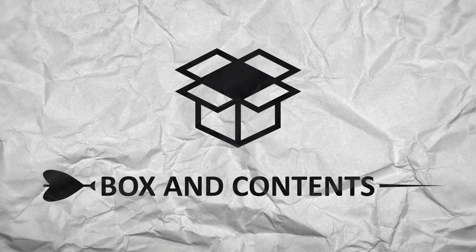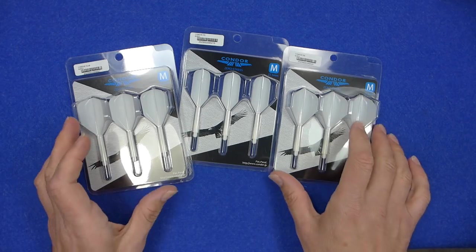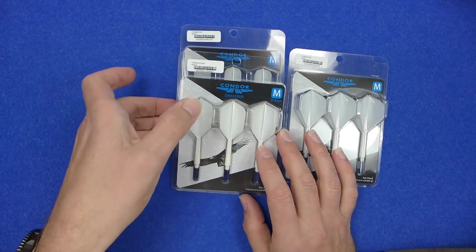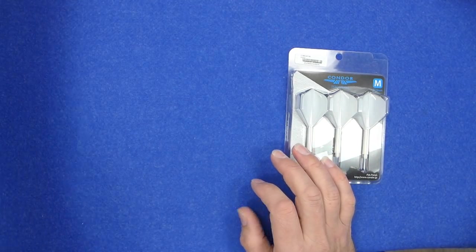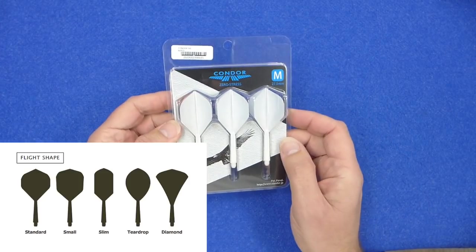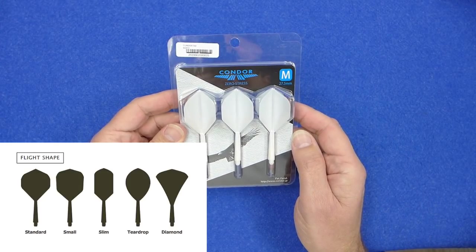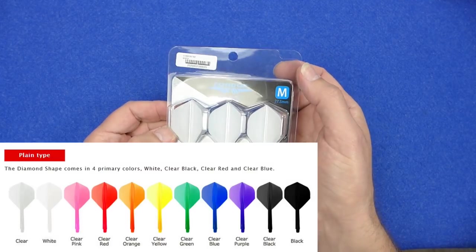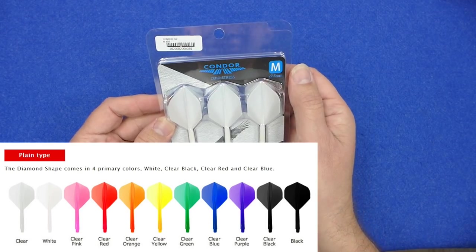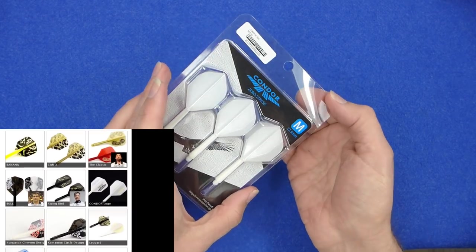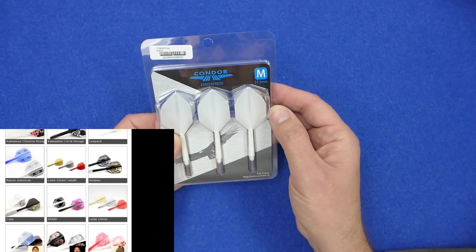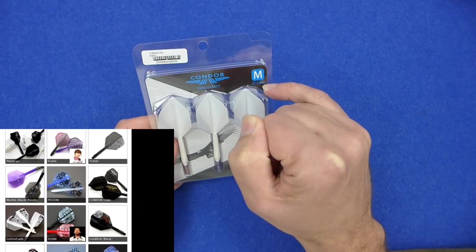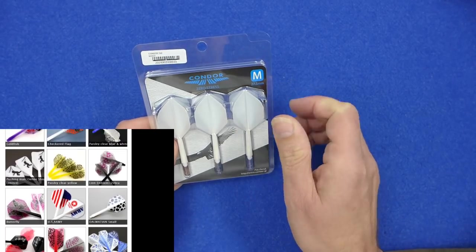The flights come in these little blister packs. I'm just going to look at the standard shape one. There's lots of colours and flights with different patterns on, quite a vast array. The three main sizes are small, medium, and large, and it tells you on the pack there that's medium 27.5 millimeter standard shape.